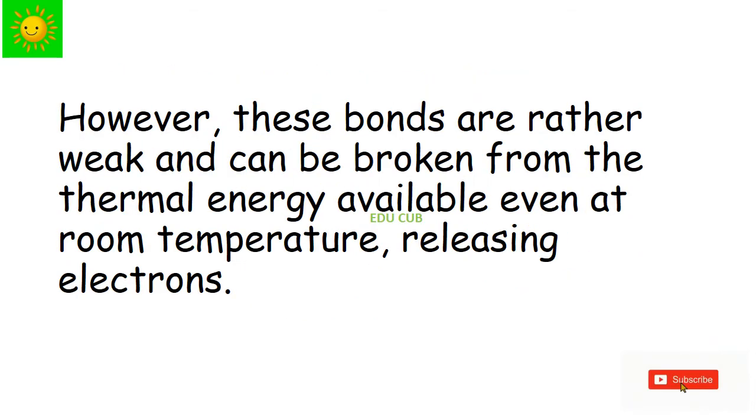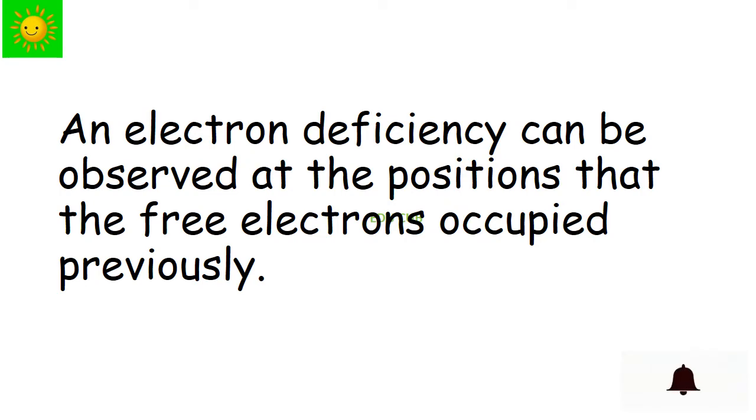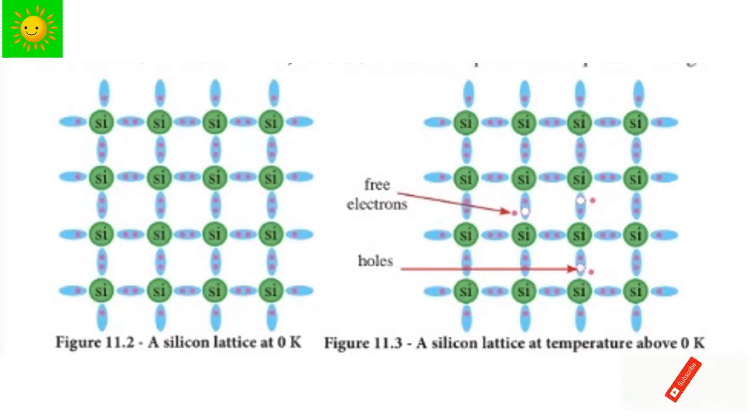However, these bonds are rather weak and can be broken from thermal energy available even at room temperature, releasing electrons. An electron deficiency can be observed at the position that the free electrons occupied previously. The first figure shows you covalent bonds of silicon lattice at zero Kelvin. All the bonds are complete at this temperature. The second figure shows that some bonds have been broken, releasing some free electrons at a temperature higher than zero Kelvin.